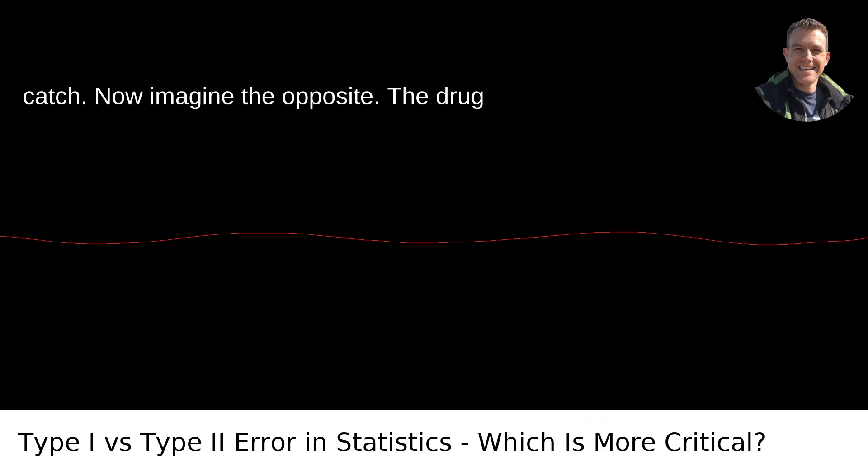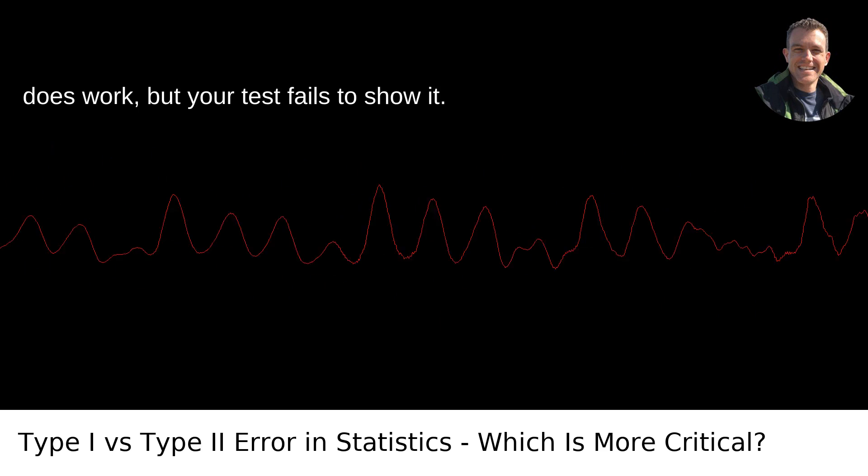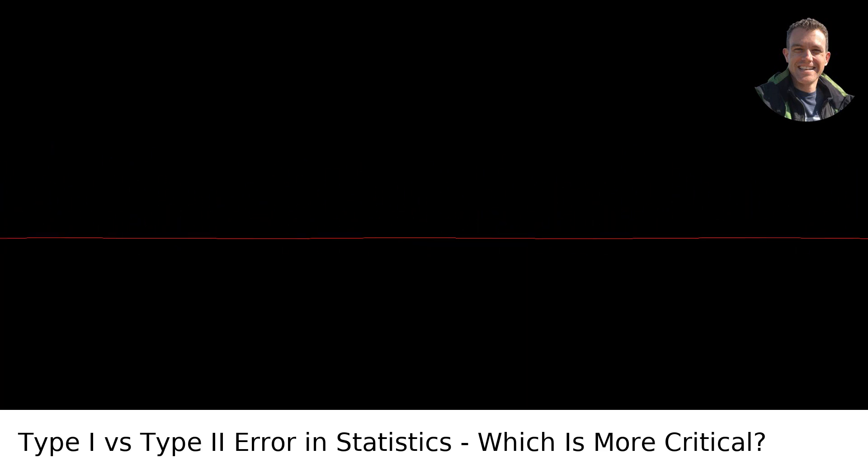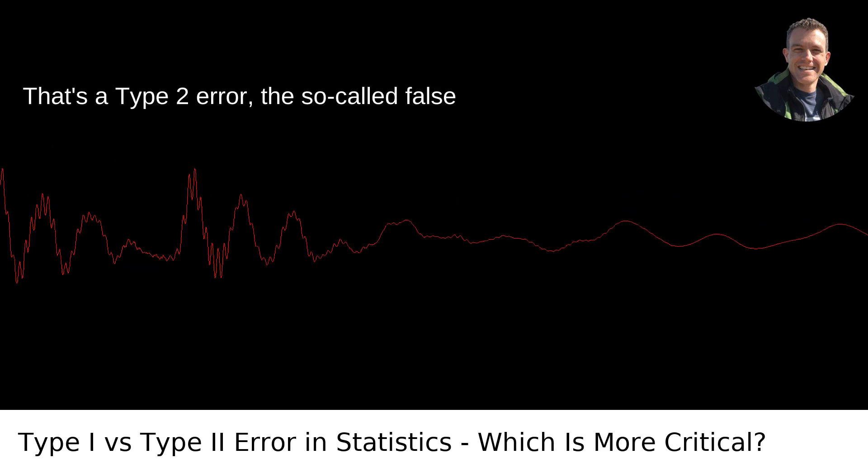Type 2 error: the missed catch. Now imagine the opposite. The drug does work, but your test fails to show it. That's a Type 2 error, the so-called false negative.